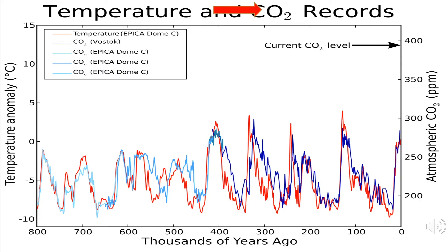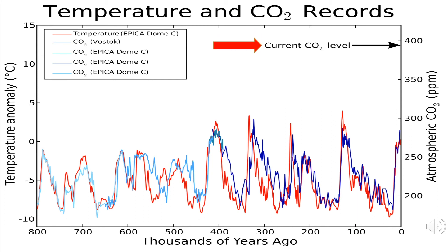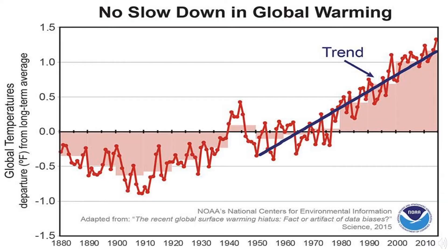The increase in the accumulation of carbon dioxide is directly related to the increase of the global temperature. This chart depicts the carbon dioxide levels thousands of years ago, as well as the temperature at the time. Now, the current CO2 is much higher compared to before, causing an overall increase in temperature — and it is not slowing down. There is a rising global temperature trend since the 1950s.